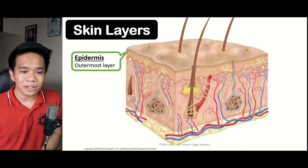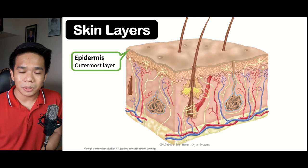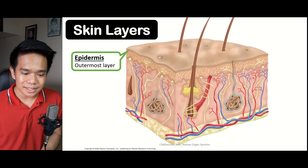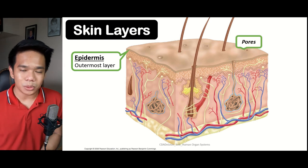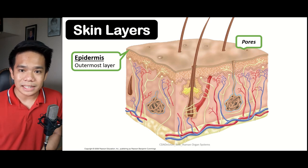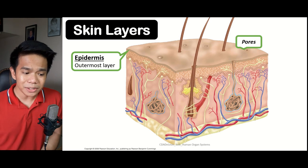The epidermis is responsible for providing the skin color. The skin color is determined by the melanocyte. You can see different openings called pores. The pores are the openings through which the sweat and oils produced by the skin come out of the body. Inside the epidermis, we have the dermis.